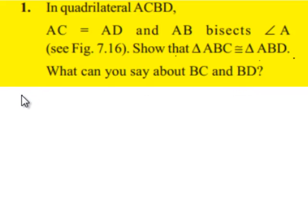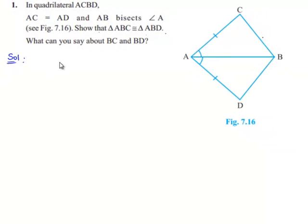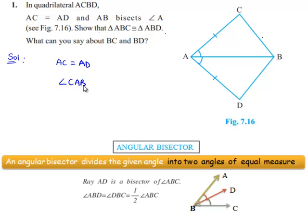Now moving on to the solution, he has given that AC is equal to AD and he says that AB bisects angle A. That means angle CAB is equal to angle BAD, as given that AB bisects angle A.